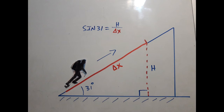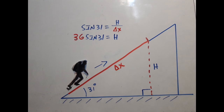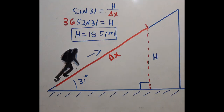Using trigonometry, sine equals opposite over hypotenuse. The man traveled 36 meters along the slope, and H is the altitude. In the picture, the blue capital H is the altitude and delta x is the hypotenuse. So sine of 31 degrees equals the altitude H over delta x. Sine of 31 equals H over 36.